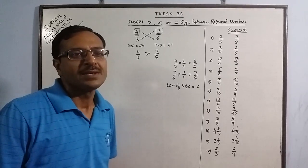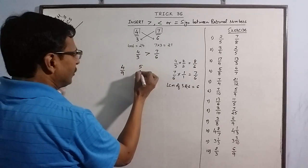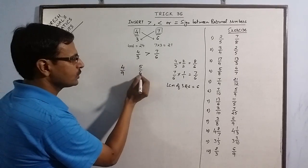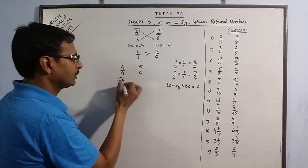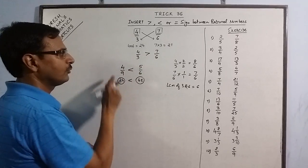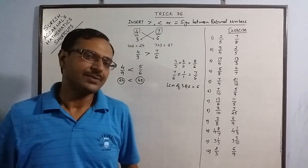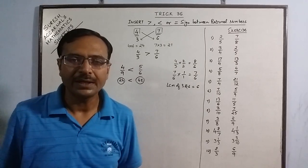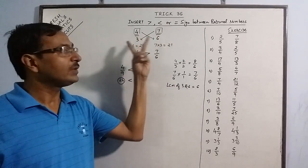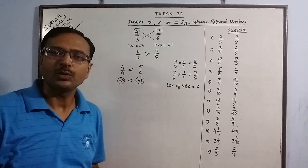Now let's take one more example: 4 by 9 and 5 by 6. Again you do the same thing—4 into 6 is 24, 5 into 9 is 45. Obviously 45 is greater, so 4 by 9 is less than 5 by 6. Things become so simple and easy when we have shortcuts, and even junior students can test whether they have put the right sign by cross multiplying and checking which product is greater.